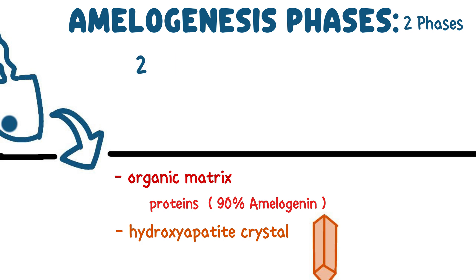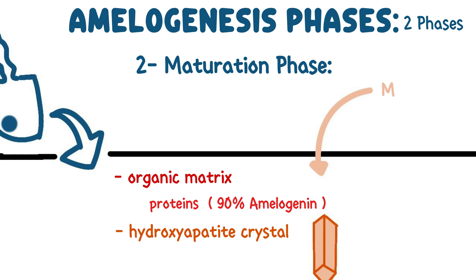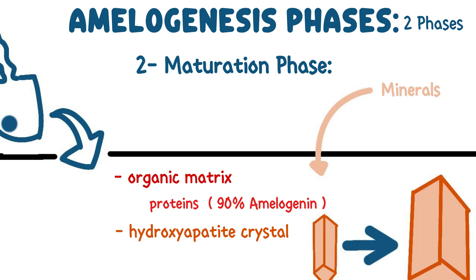Two, maturation phase. During this phase, there is an influx of minerals that allows for the growth of hydroxyapatite crystals. Simultaneously, organic proteins are eliminated, contributing to the final hardness and mineral density of the enamel.